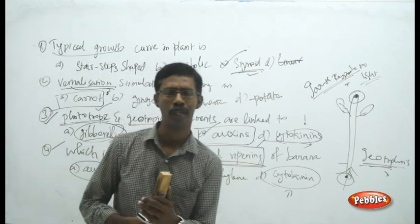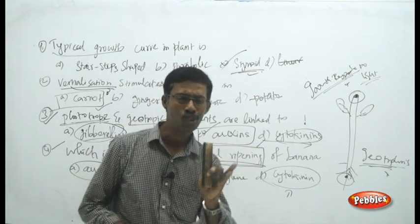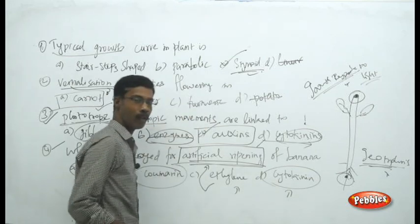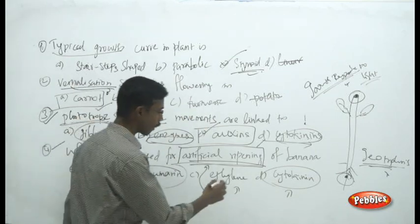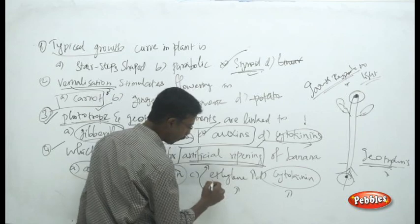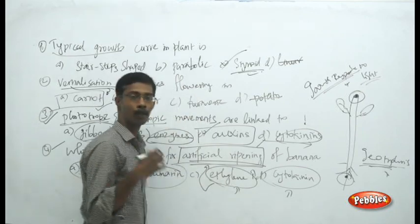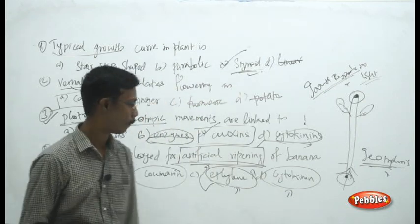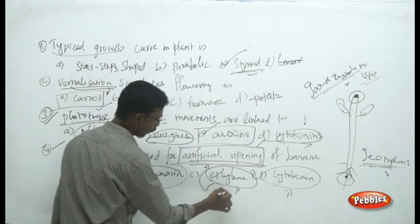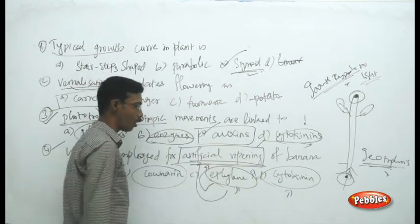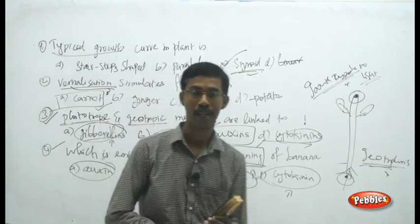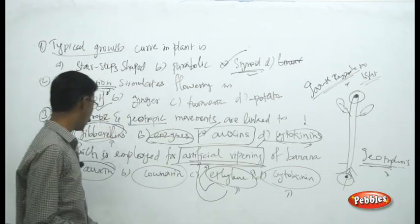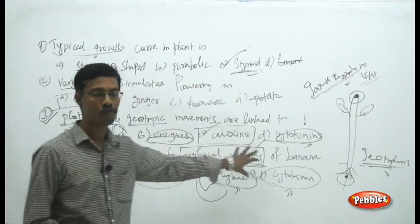By applying ethylene gas artificially to a particular fruit, we can make the fruit ripen. The answer: ethylene is employed for artificial ripening of banana. This is what you have to remember about the ripening of banana artificially.